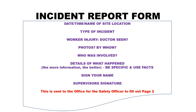The incident report form includes the date, time, name of site, location, type of incident, worker injury, whether a doctor was seen, whether photos were taken and by whom, and who else was involved. Details of what happened — the more information the better. Be specific and use facts. Sign your name and your supervisor's name and signature. This is then sent to the office for page two to be completed.